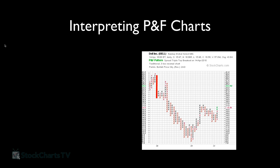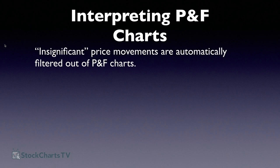That's the conceptual relationship between bar charts and PnF charts: slanted trend lines on a bar chart become vertical columns on a PnF chart. Keep that in mind as we get into the details of how these charts are drawn.